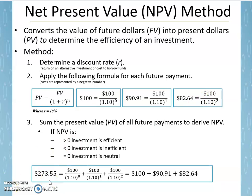If you get a net present value that is greater than zero, we would consider it efficient — it should be pursued. If it is less than zero, the investment is inefficient and should not be pursued. And if you get a zero, the investment is neutral — it wouldn't matter. You'd be in the same situation after the investment as you were before.